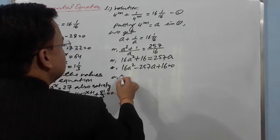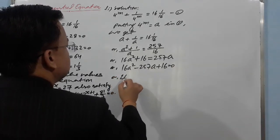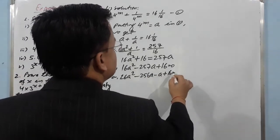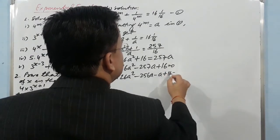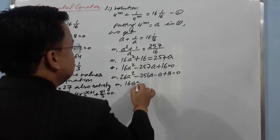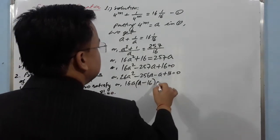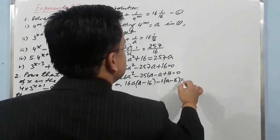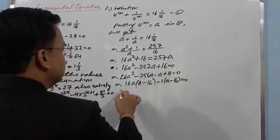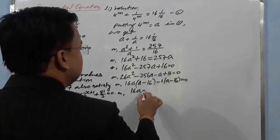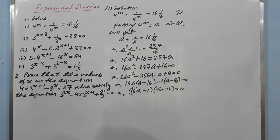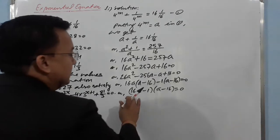We need to break 256 to split the middle term. So we write 16a² - 256a - a + 16 = 0. Taking common factors, we get 16a(a - 16) and 1(a - 16), giving us (16a - 1)(a - 16) = 0.